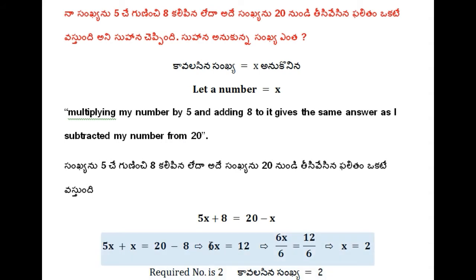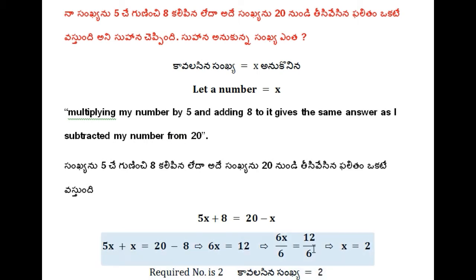So dividing by 6 on both sides to eliminate 6 — the coefficient of the subject must always be equal to 1. That is the third character of the subject. To eliminate 6, dividing by 6 on both sides — 6x gets cancelled. x is equal to 2.